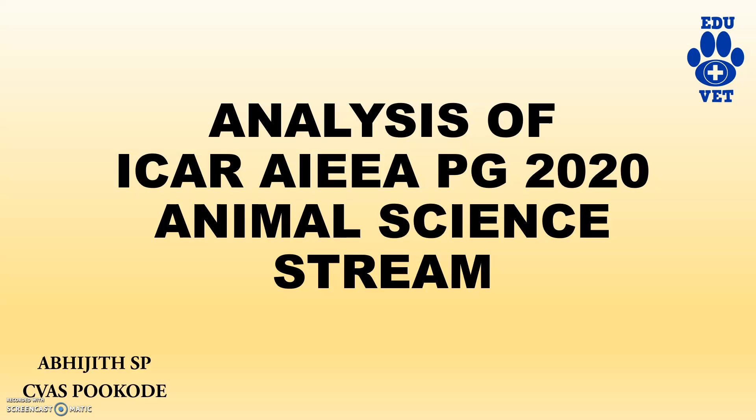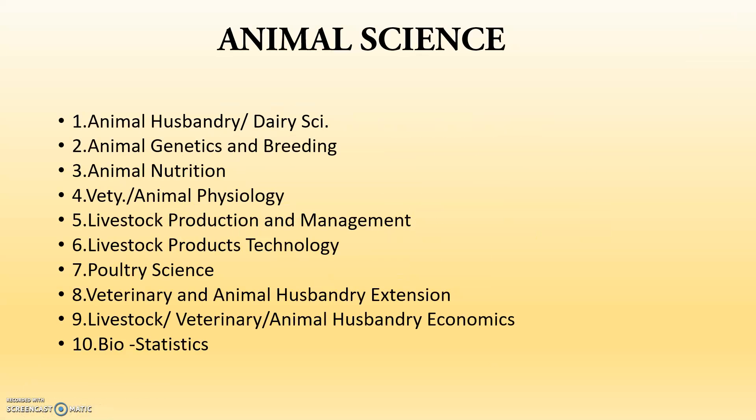We will be depending mainly on the question paper to get a proper analysis on the weightage of questions. In Animal Science, we will be having 10 subjects mainly: Animal Husbandry and Dairy Science, Animal Genetics and Breeding, Animal Nutrition, Animal Physiology, LPM-LPT, Poultry Science, Extension, Livestock Economics, and Biostatistics.